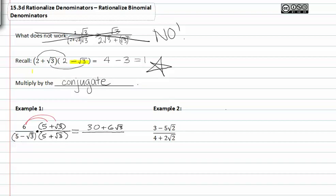In the denominator, I can remember that multiplying the first terms together and the last terms together will give me all the pieces I need, because when you multiply conjugates, the middle terms always add to zero. So five times five is twenty-five, and the square root of three times the square root of three gives me minus three. Twenty-five minus three is twenty-two, and in the numerator I get thirty plus six root three.